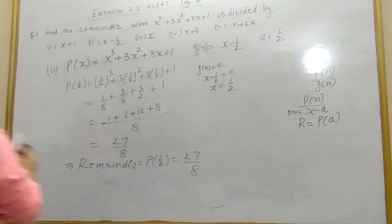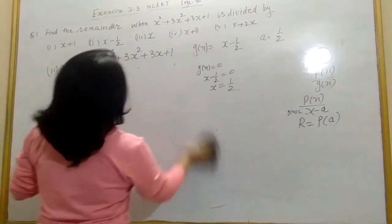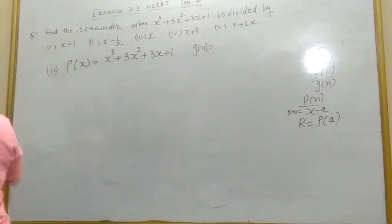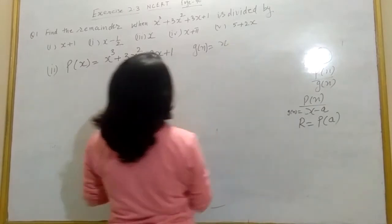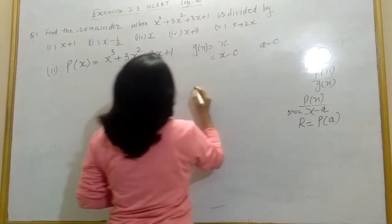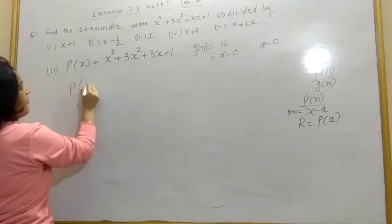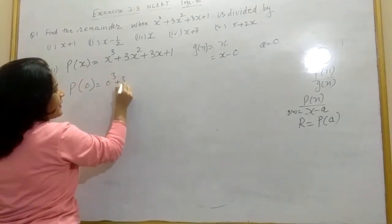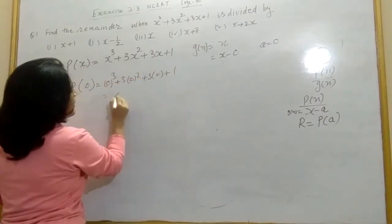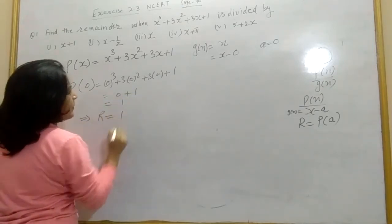Third part: g(x) = x. We can write this as x − 0, so a = 0. p(0) = 0³ + 3(0²) + 3(0) + 1 = 0 + 1 = 1. Hence the remainder is 1.